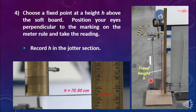Choose a fixed point at the height H above the softboard. Then position your eyes perpendicular to the marking on the meter roll and take the reading. Record the value of H in the data section.